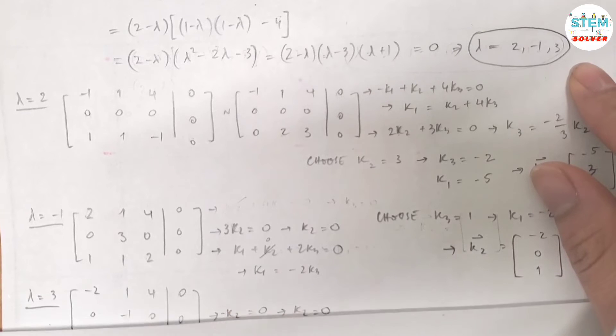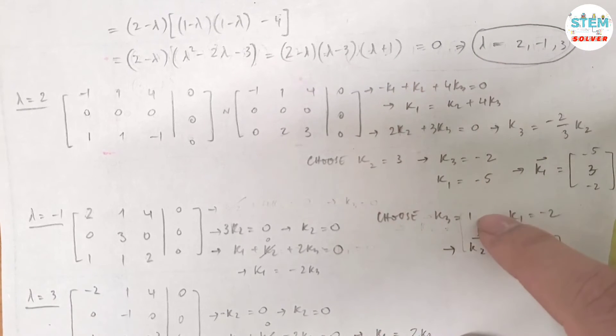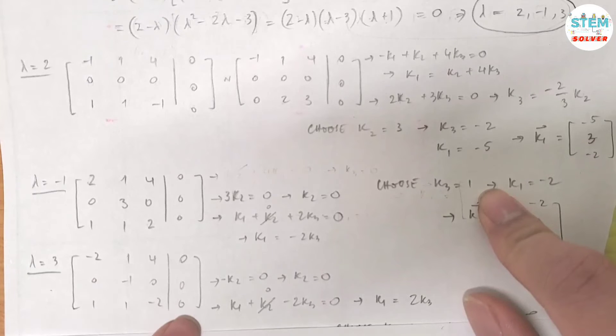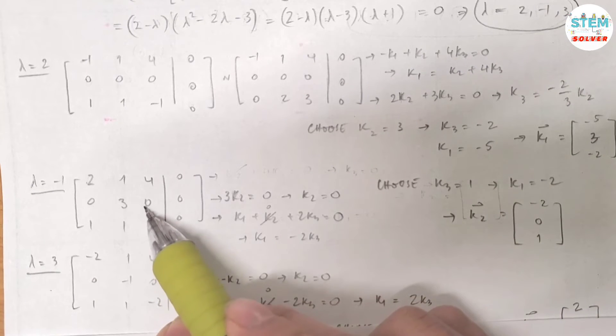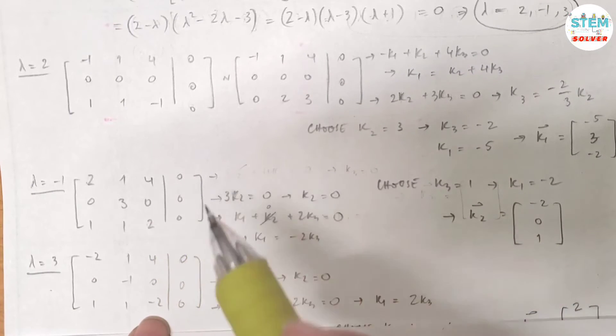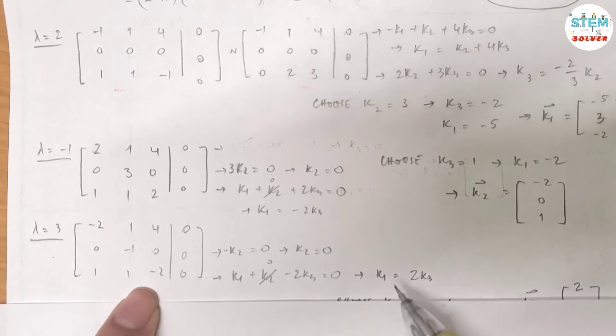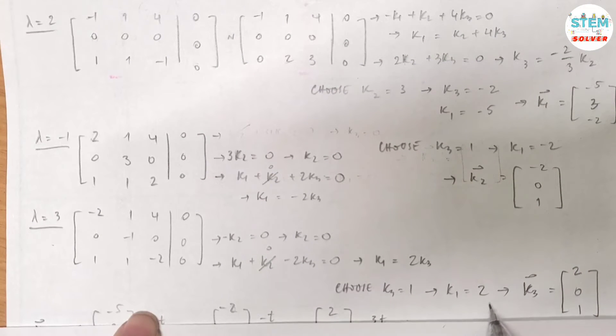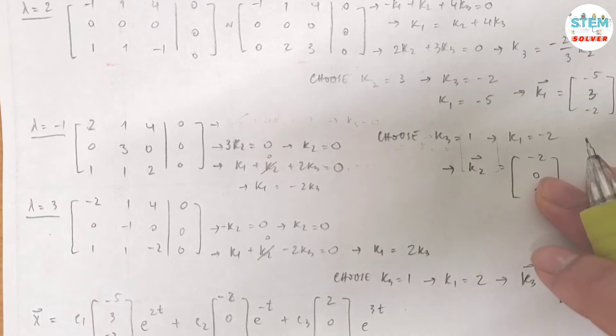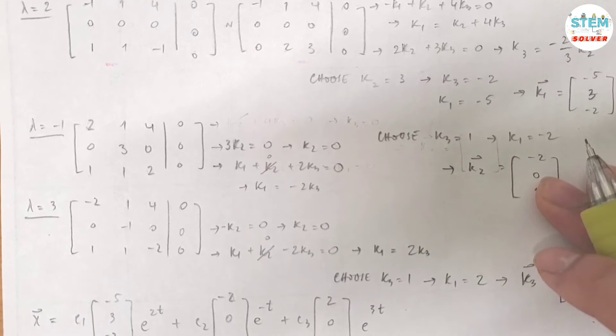Look into A minus λI, you will get this matrix augmented with 0. Again, this case similar to this matrix, second equation gives you k₂ equals 0, third equation gives you k₁ equals k₃. If I choose k₃ equals 1, then k₁ is 2. Then vector k₃ is [2, 0, 1]. Now it's time to write our general solution.